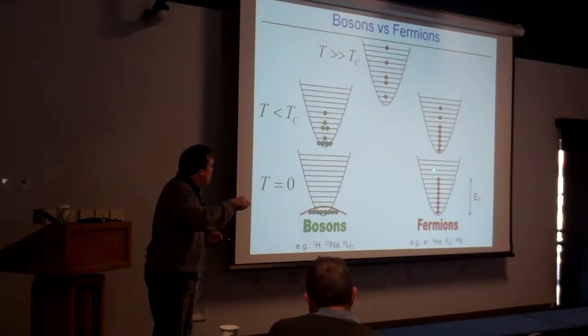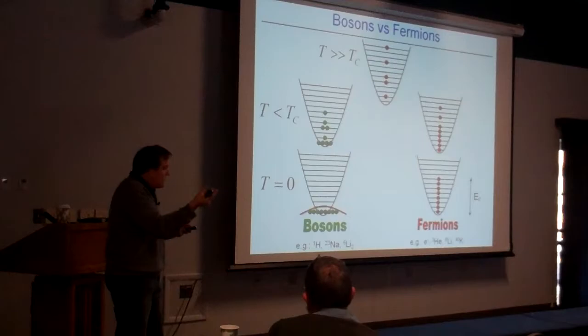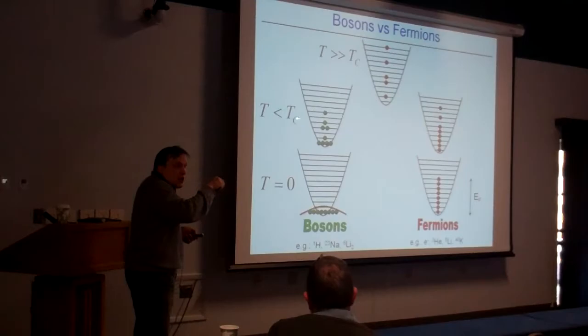The highest energy state that is occupied is called the Fermi energy. It is given by the degeneracy temperature: ℏ²/m divided by the interparticle distance squared. It's also roughly comparable, with a prefactor, to the critical temperature needed to make bosons condense into the ground state.